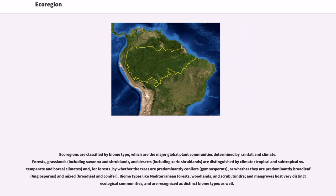Ecoregions are classified by biome type, which are the major global plant communities determined by rainfall and climate. Forests, grasslands, and deserts are distinguished by climate and, for forests, by whether the trees are predominantly conifers or whether they are predominantly broadleaf and mixed. Biome types like Mediterranean forests, woodlands, and scrub, tundra, and mangroves host very distinct ecological communities and are recognized as distinct biome types as well.